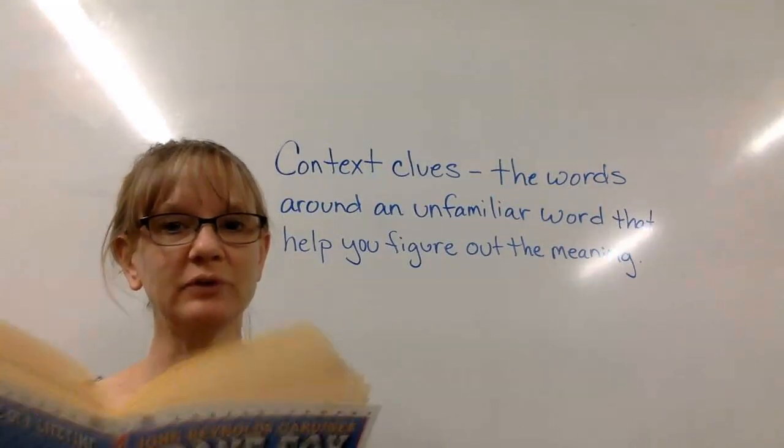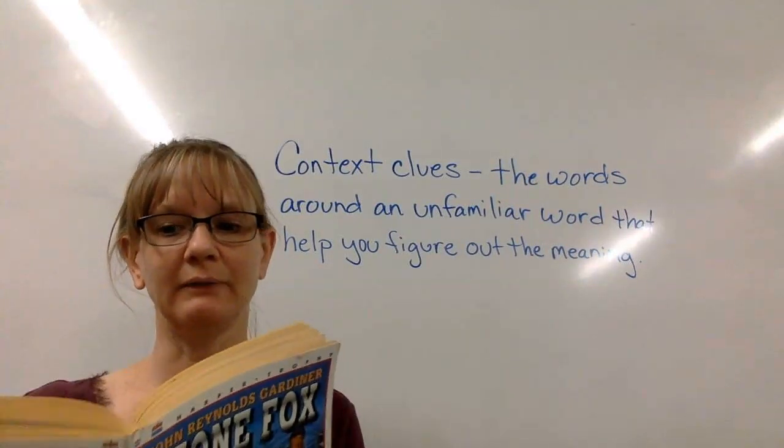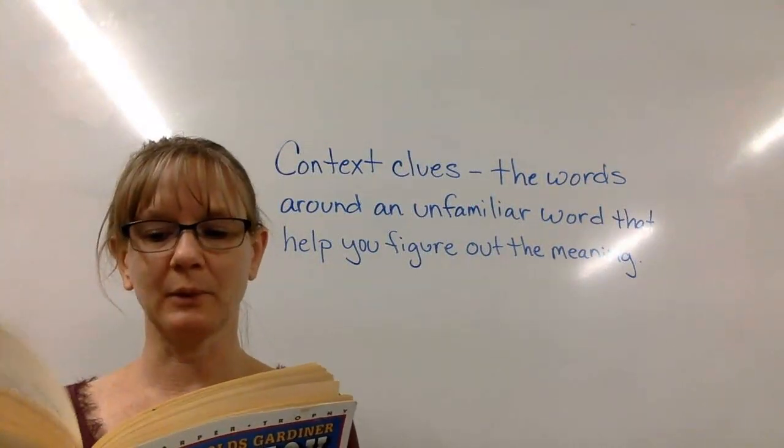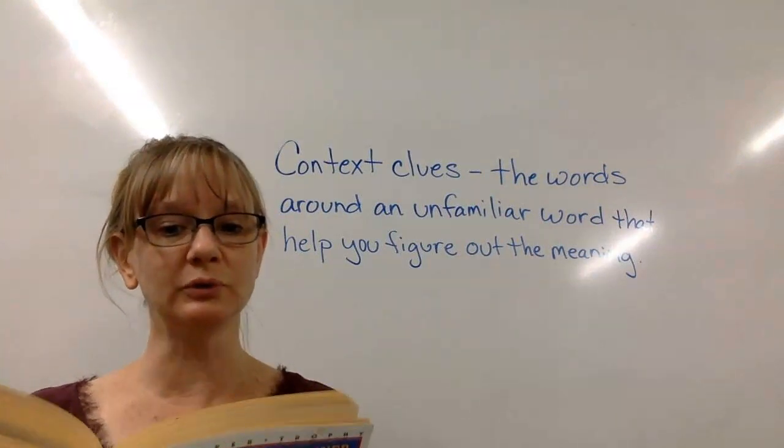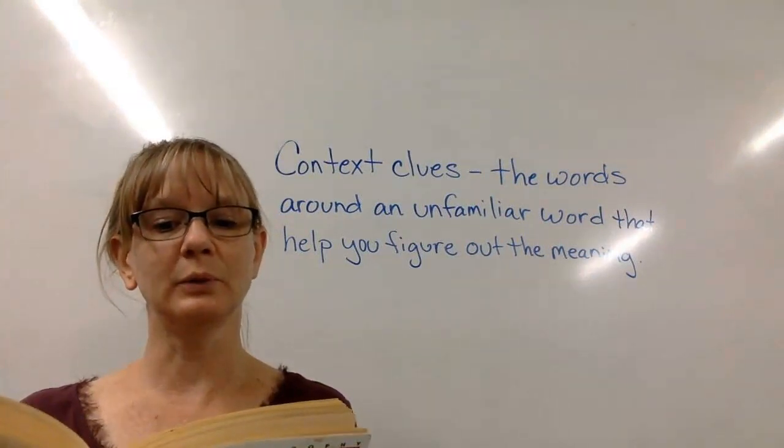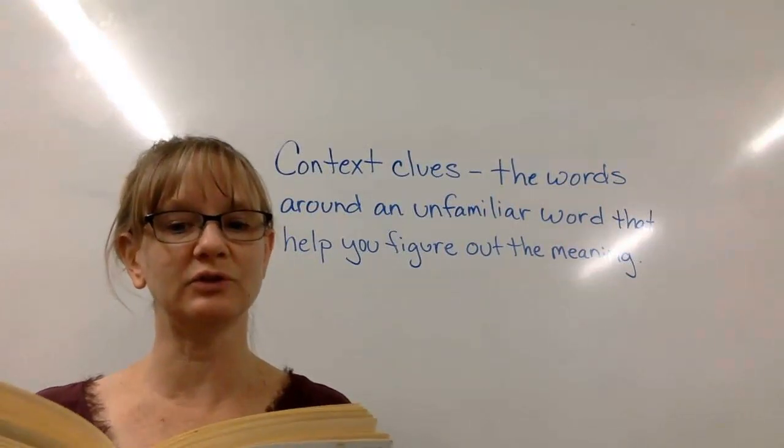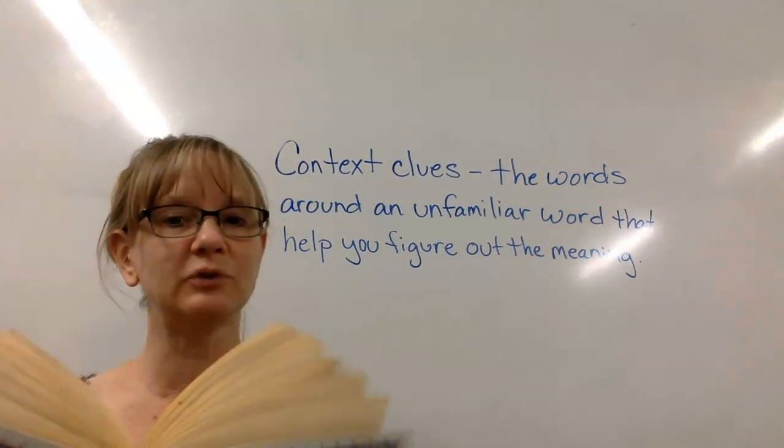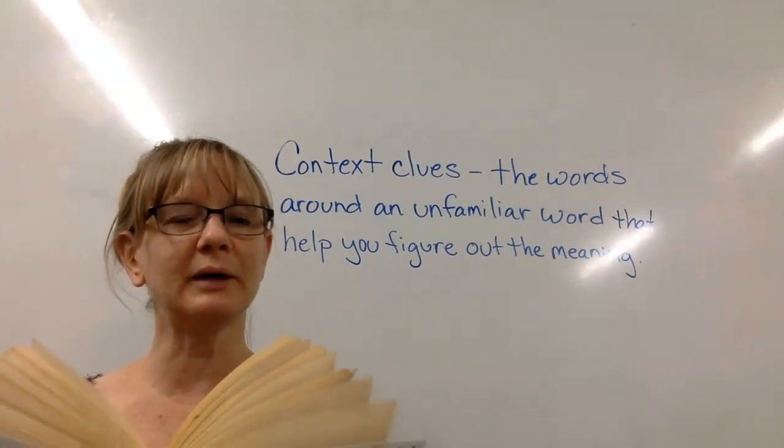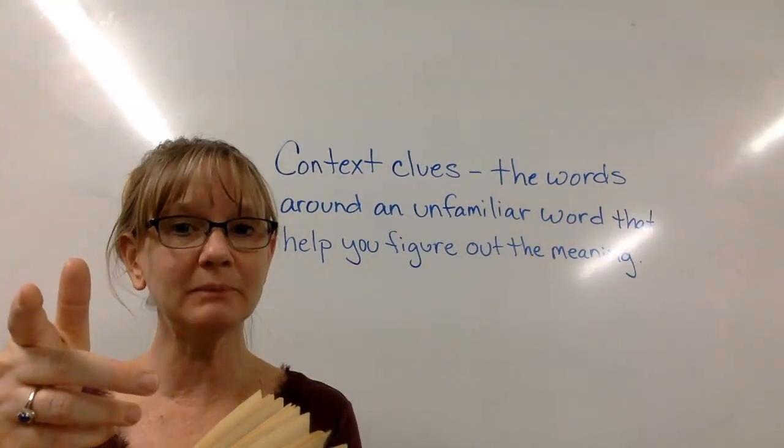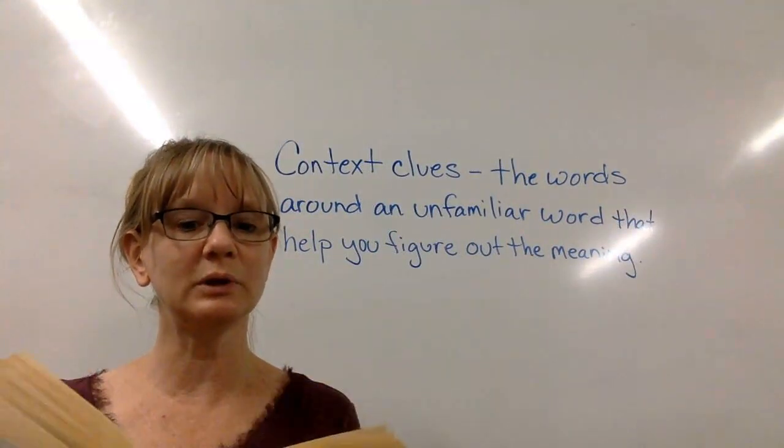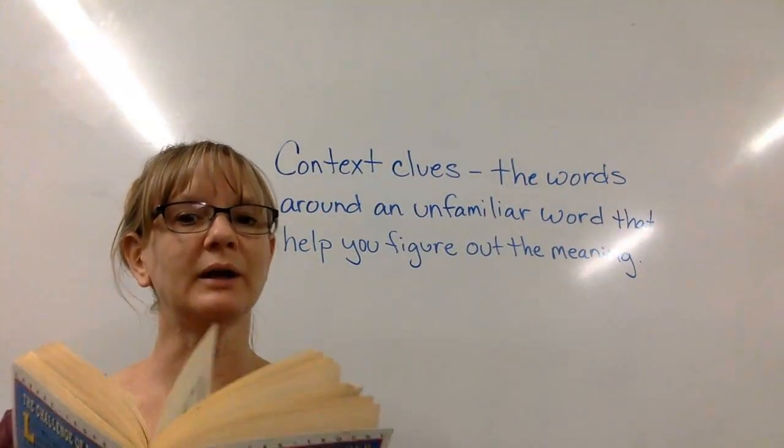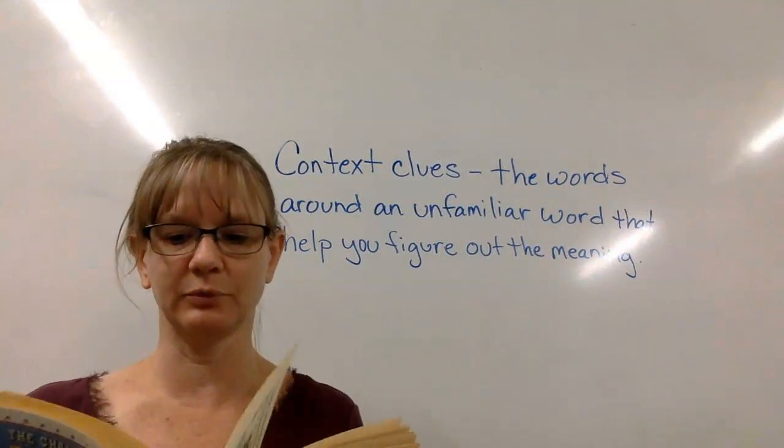His hand was shaking. And then later, it says, Little Willie says, 'Don't shoot!' Little Willie yelled as he reached out and touched Searchlight gently on the back. So, with all of those clues around the word derringer, something that Mr. Snyder pointed at him, and then Little Willie said 'Don't shoot!' Those are context clues that show you that a derringer is a gun. A small gun.